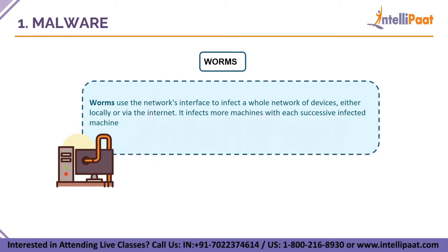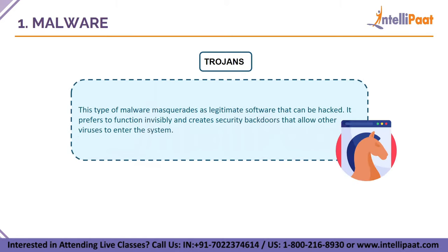The next type of malware is worms. Worms use the network interface to infect an entire network of devices, either locally or remotely via the internet — with each infected machine, it infects more machines. Worms are spread via software vulnerabilities. Trojans are malware that masquerades as legitimate software. Trojans prefer to operate invisibly and create security backdoors through which other viruses can enter the system. Unlike a worm, they need a host to work.